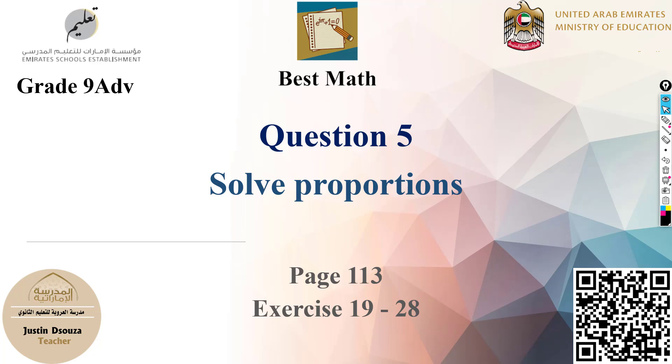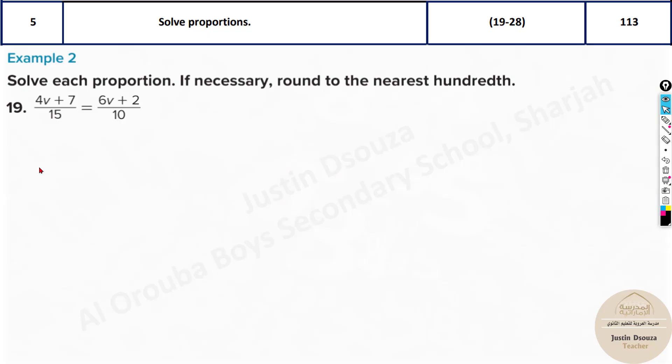Moving on to question number 5, which is to solve proportions. This is similar to the previous topics - the same method and concept, but a bit longer this time. You can see the problems are like this. Here we have to solve each proportion, if necessary round to the nearest hundredth.